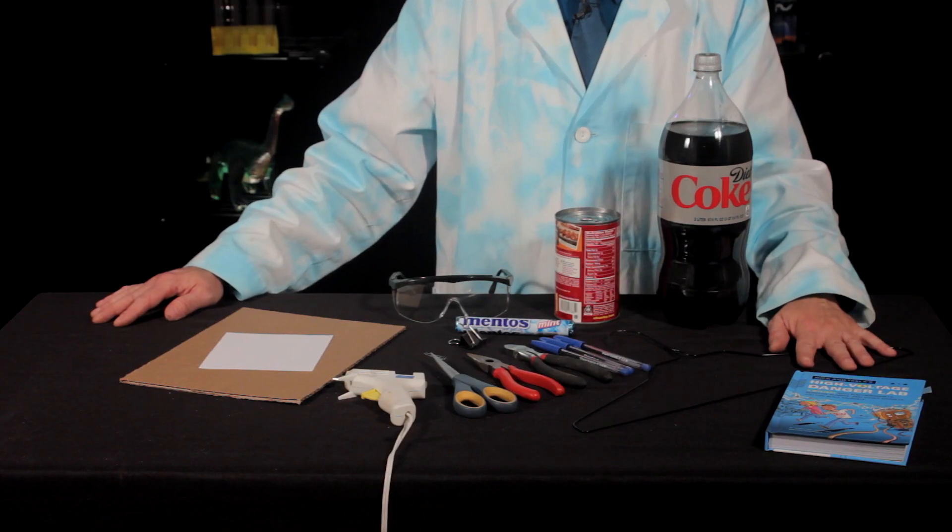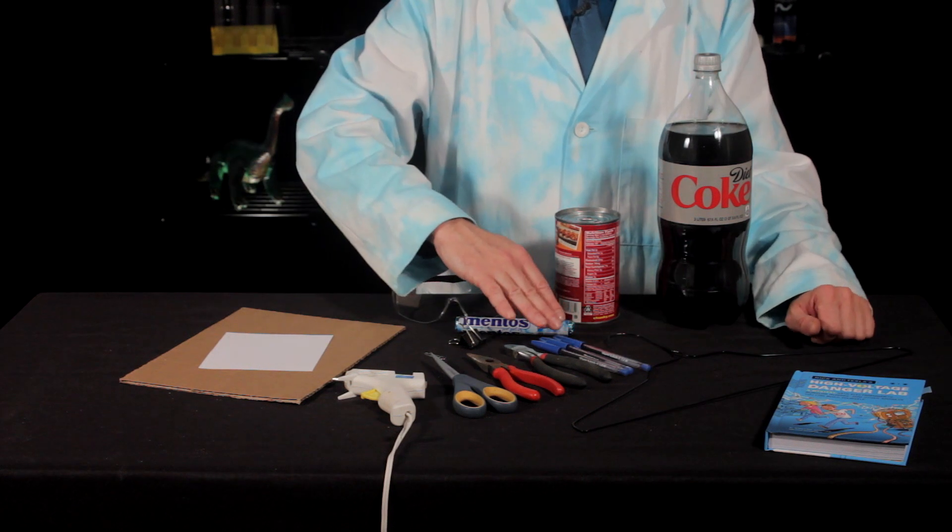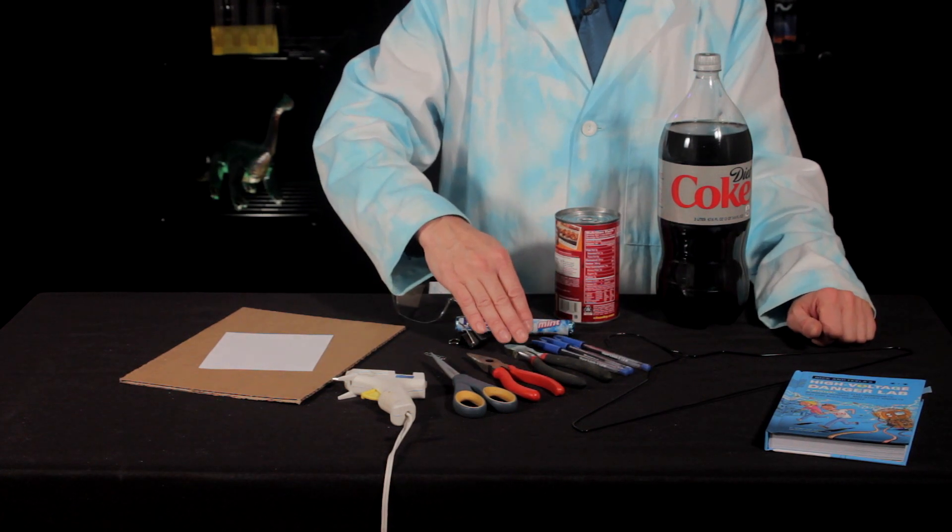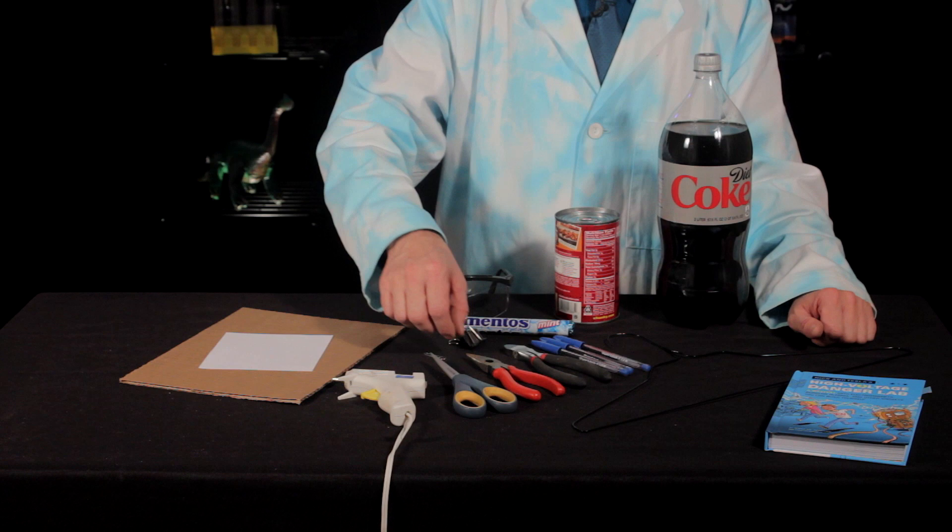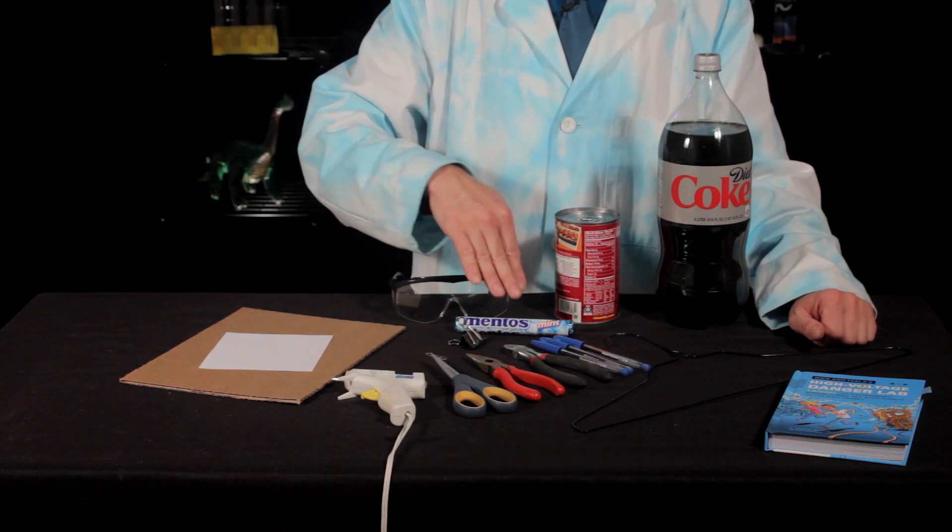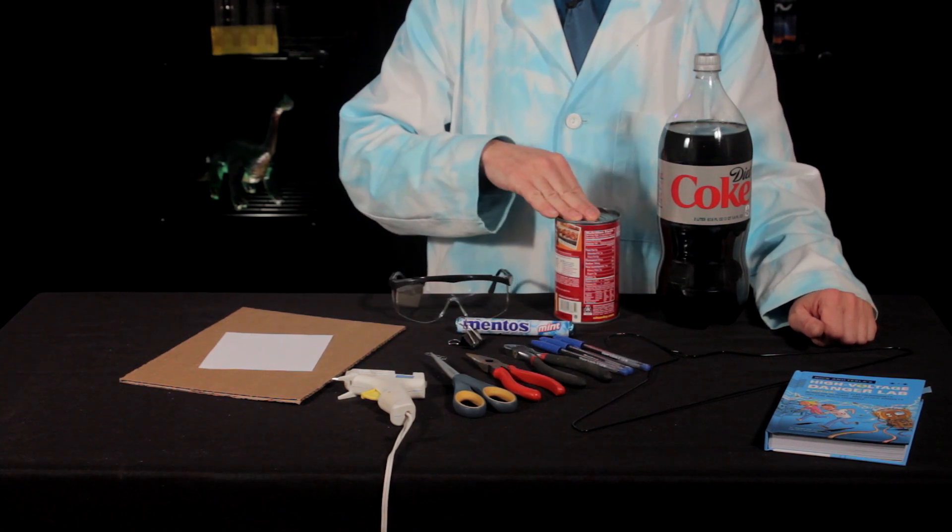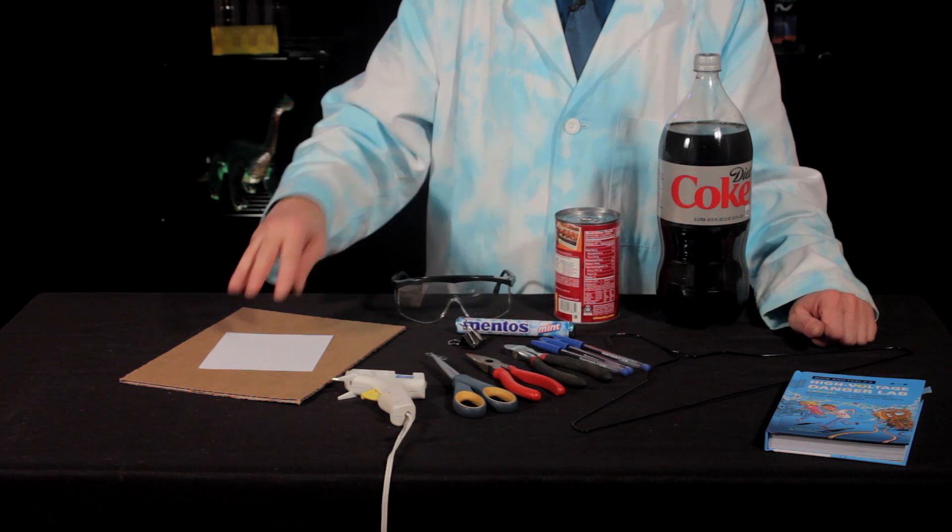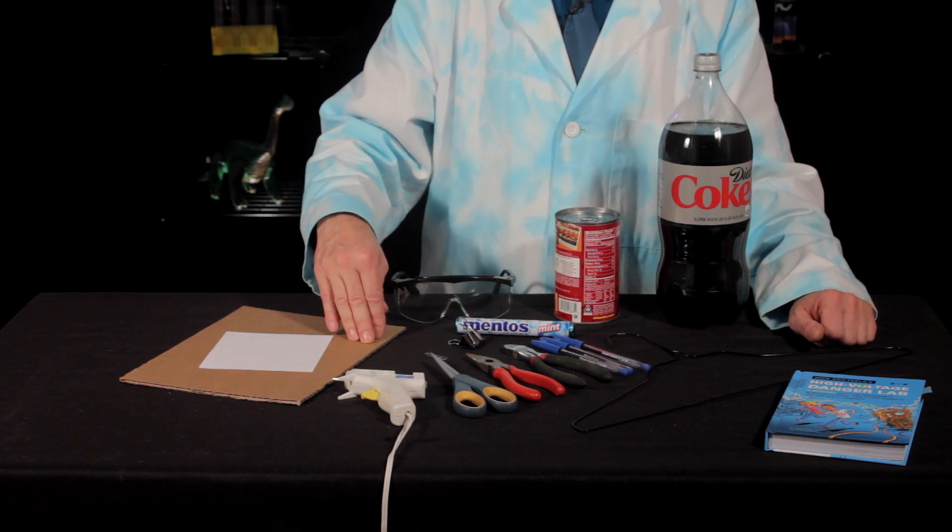In order to make your very own Diet Coke and Mentos power vehicle, you're going to need Diet Coke, a wire coat hanger, a couple of ballpoint pens, wire clippers, some needle nose pliers, some scissors, a hot glue gun, a paper clip, a book clip, some Mentos candies, a soup can, some safety goggles, some regular paper, and some cardboard.